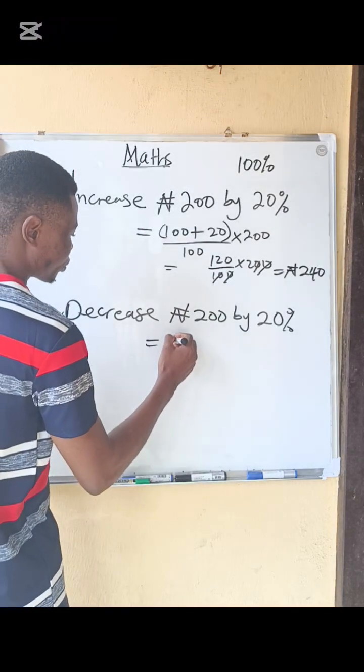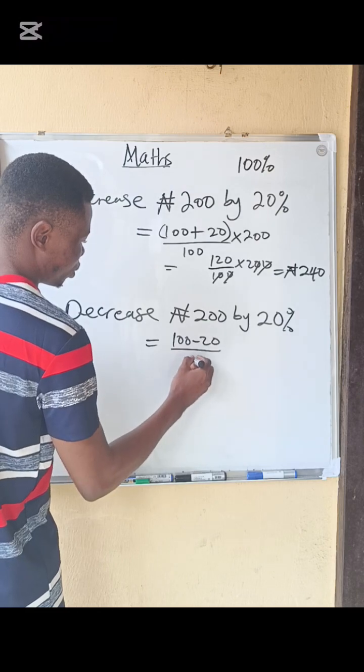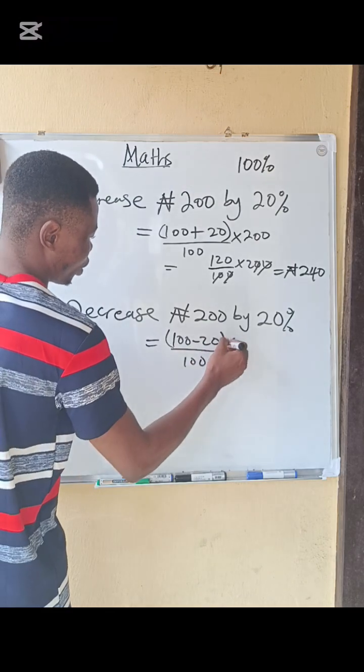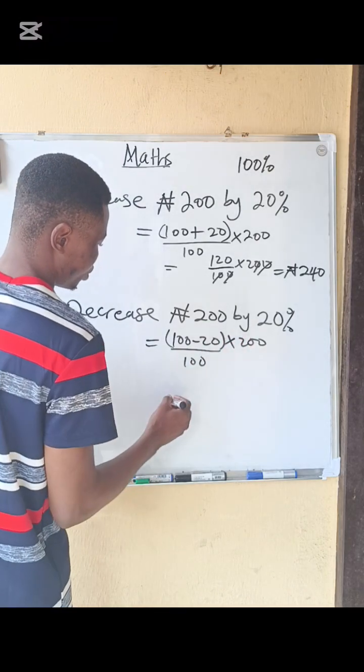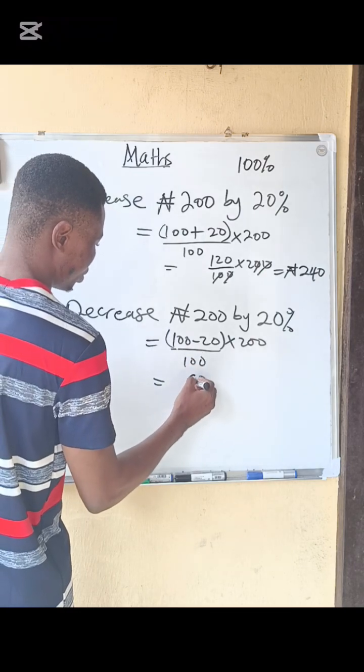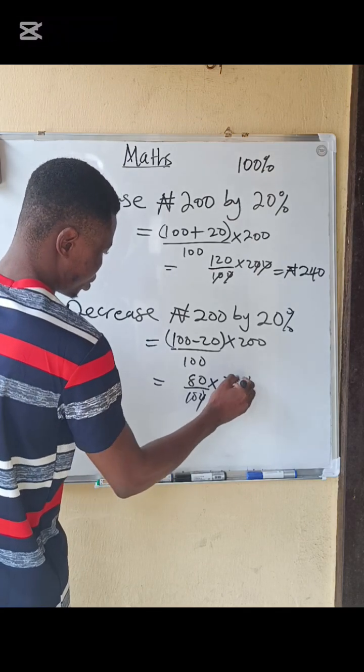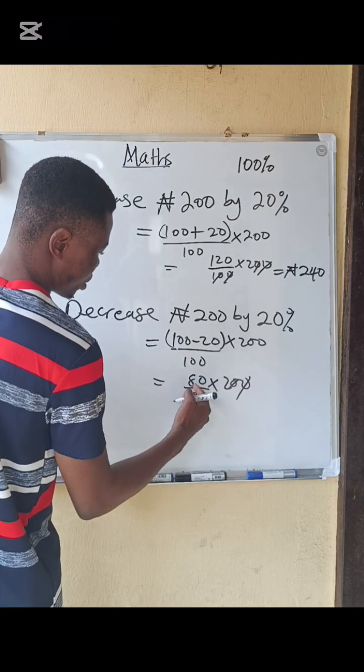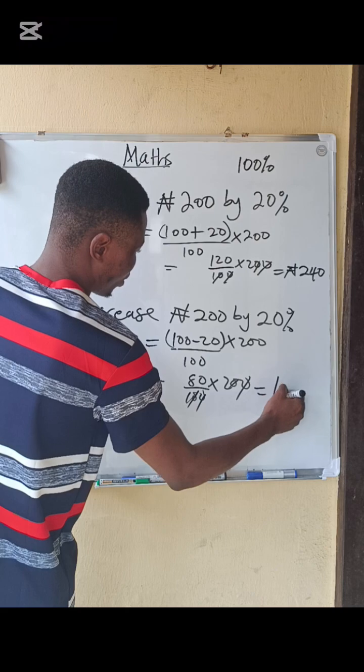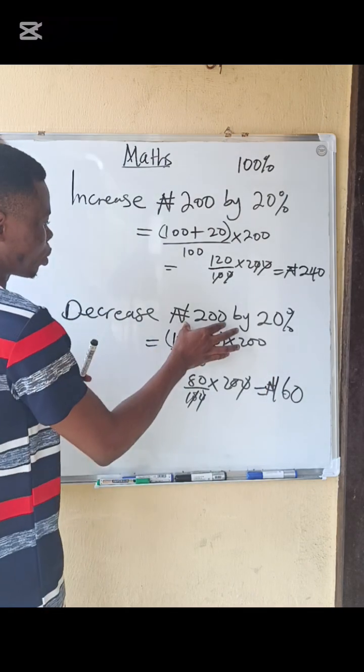This will be 100 minus 20, all over 100, then multiply by 200. We proceed. So this will give you 80 over 100 multiply by 200. Zero, zero, zero, zero, zero. Two times 80, that will give you 160.